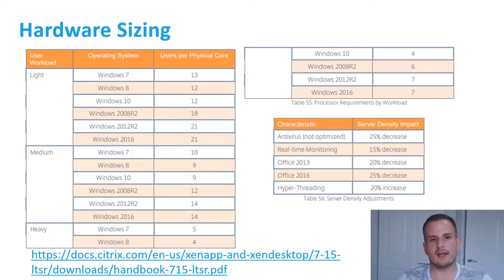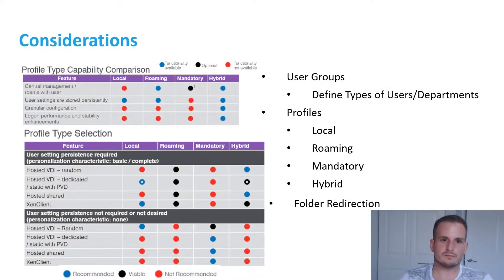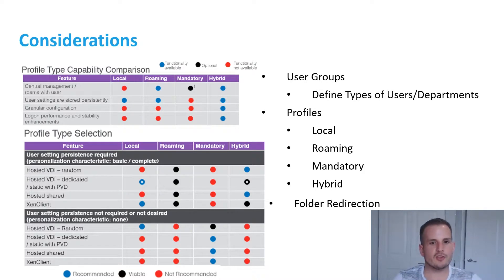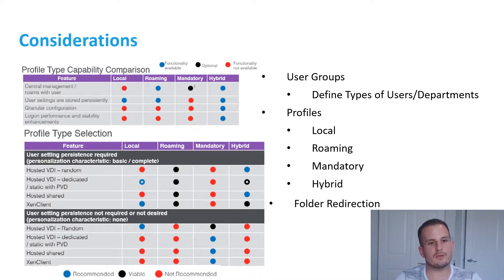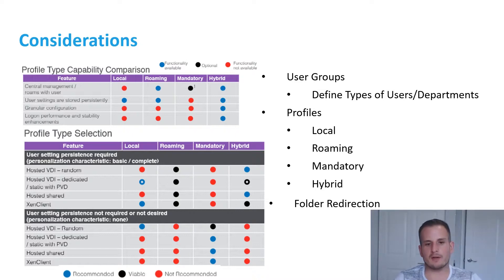For considerations, the first one is your user groups. You'll want to clearly define what type of users you have within your organization — more likely than not, users in one group will use different applications from users in another group. It's important to understand this to ensure a smooth rollout when you're creating your virtual desktops and application servers, because there are a lot of considerations around application layering and image management.